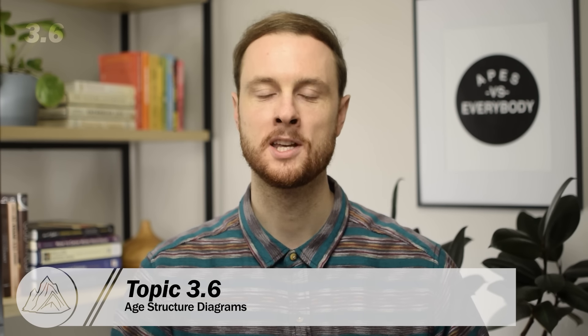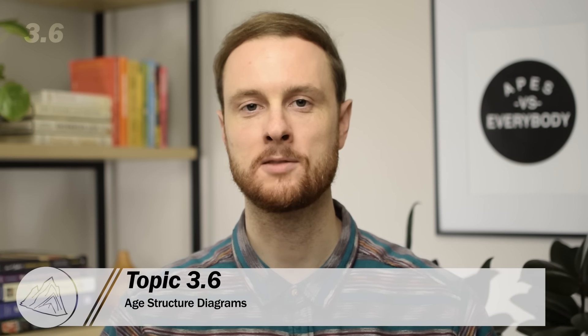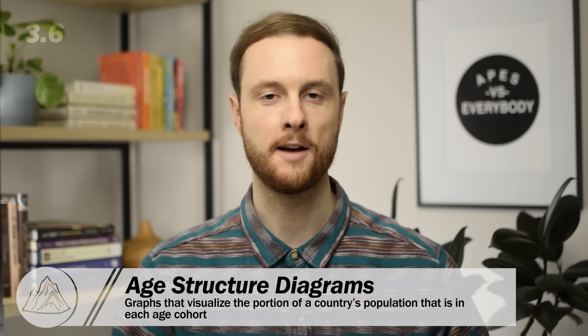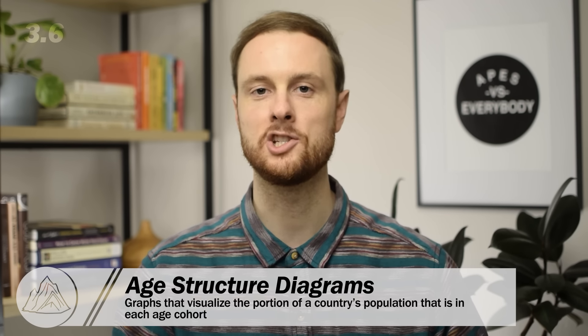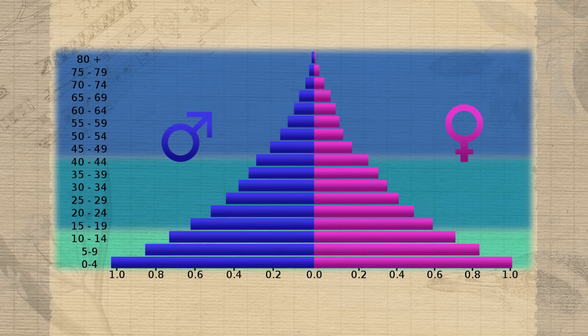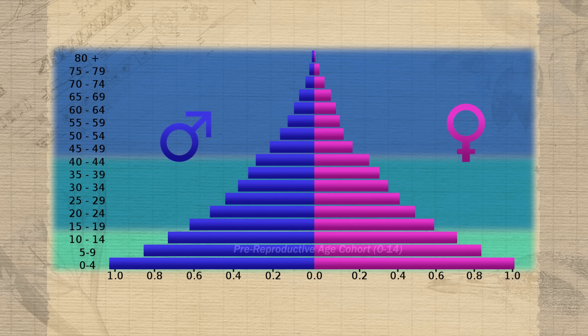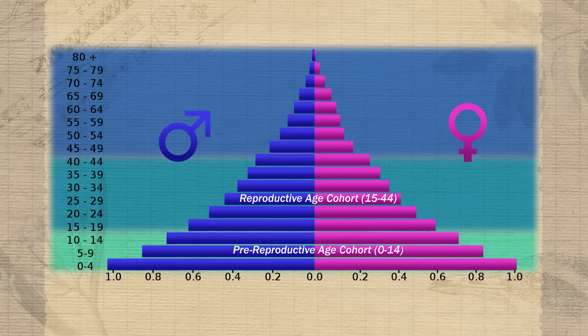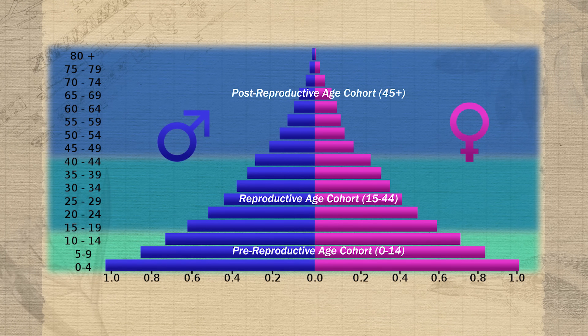Now that we've covered ecological or natural populations, we need to turn our attention to human populations. We'll start topic 3.6 with age structure diagrams — a form of graph used to visualize the proportion of a country's population in each age cohort. Each bar represents all individuals in the same age range. The key to age structure diagrams is to break the diagram into three basic groups: the pre-reproductive age cohort from 0 to 14, the reproductive age cohort from 15 to 44, and the post-reproductive age cohort from age 45 on up. The number one mistake APES students make is just memorizing the shapes instead of understanding what the different age cohort sizes actually mean.